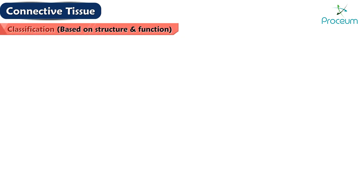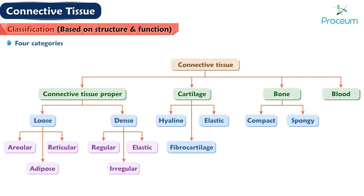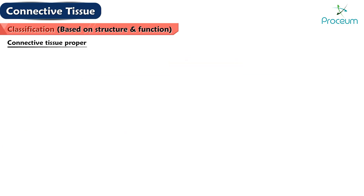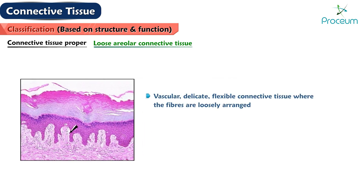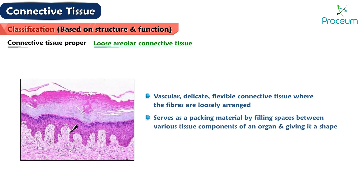Connective tissue can be broadly classified into four categories. Connective tissue proper includes loose areolar connective tissue, which is a vascular, delicate, flexible connective tissue where the fibers are loosely arranged. It serves as packing material by filling spaces between various tissue components of an organ, giving it a shape — for example, subperitoneal tissue, endomysium, and lamina propria.